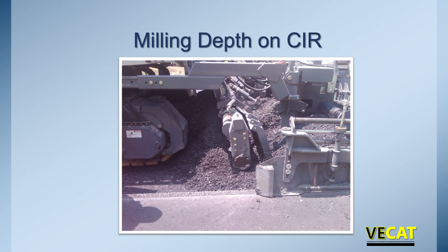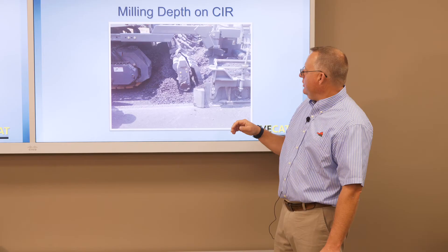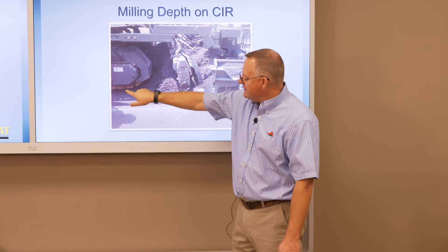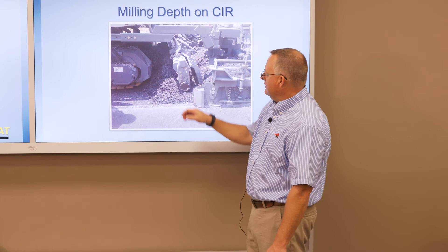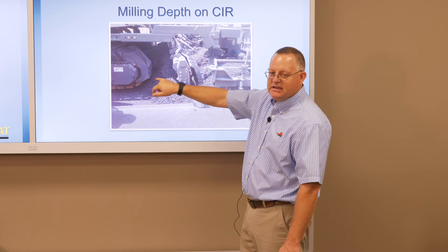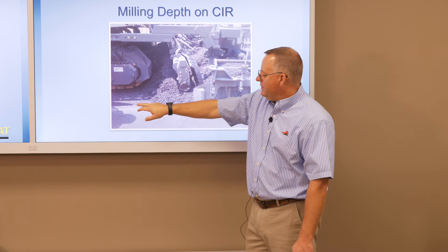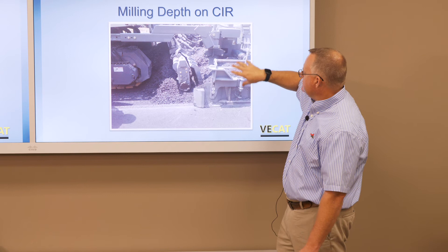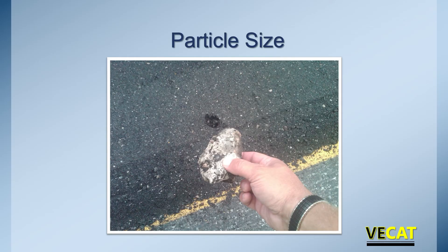In this field photo, you can see the milling head up front and the existing underlying pavement exposed behind it — you can measure that depth directly. To check gradation, pull unstabilized material out before the stabilizing agent is added and do a dry sieve. You can do a quick depth check with a ruler right there. Here the material is coming out with a screed attached to the cold in place recycler, being spread for compaction immediately.